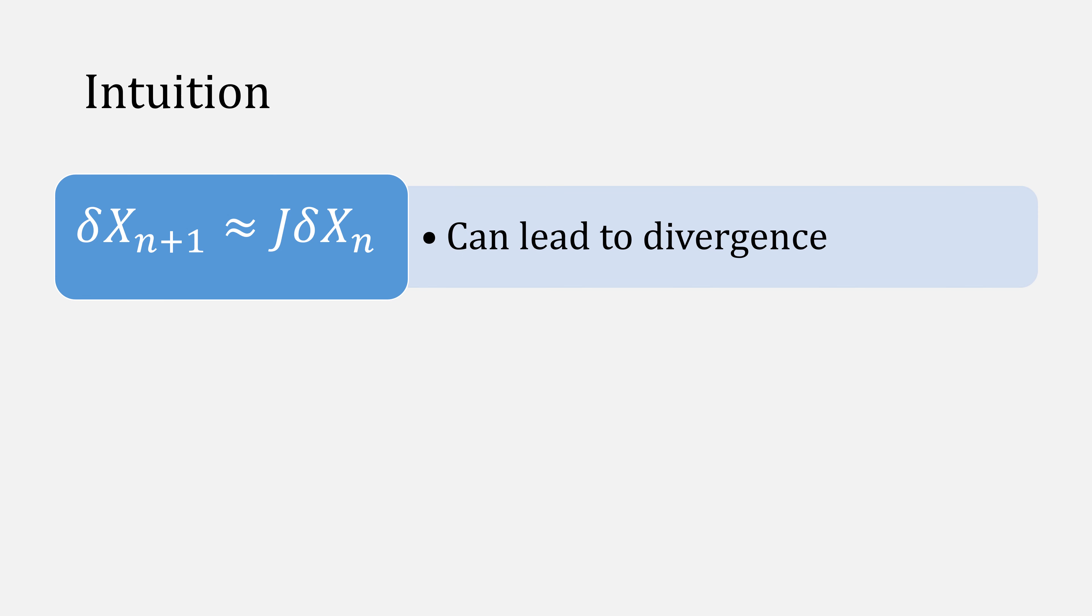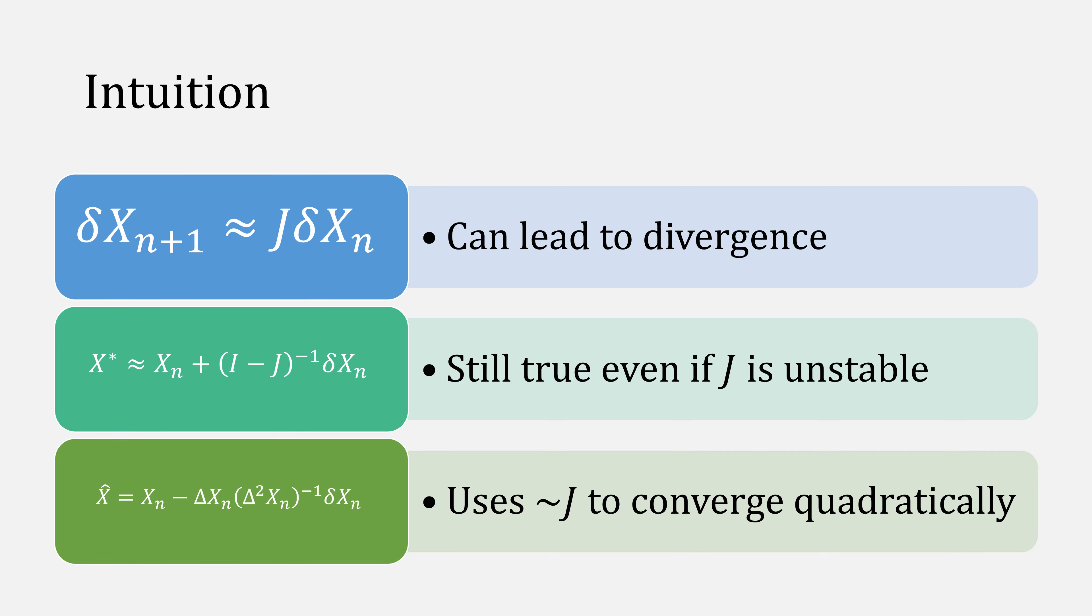First, we know that from fixed point iteration, normally this expression can lead to divergence, but with Aitken's delta squared method, the equation for x-star is still true even if j is unstable. And the reason we're getting quadratic convergence is because we're using the Jacobian in a roundabout way.